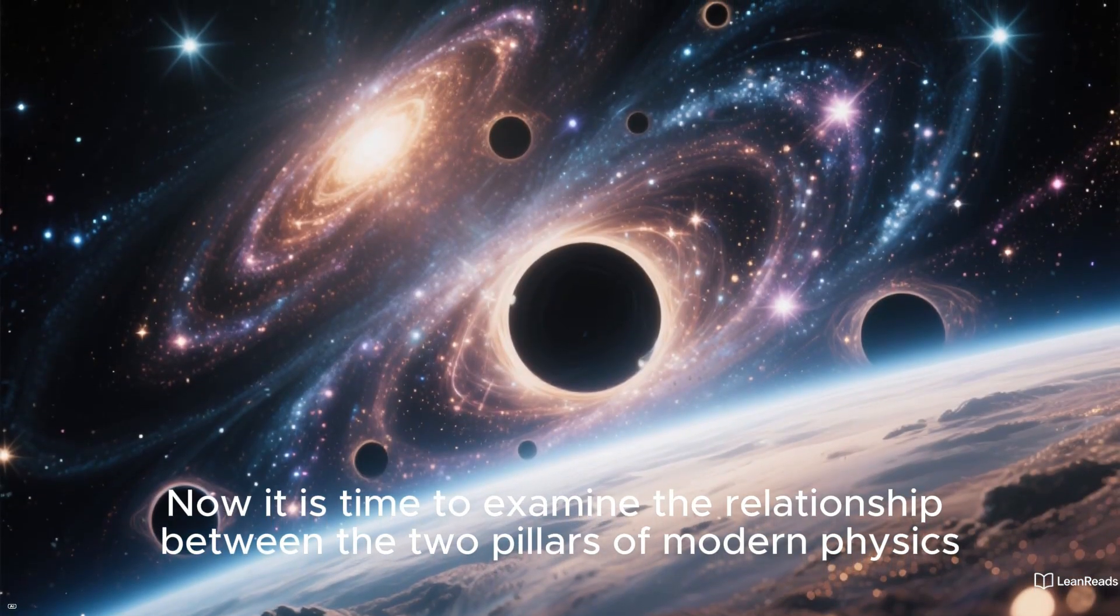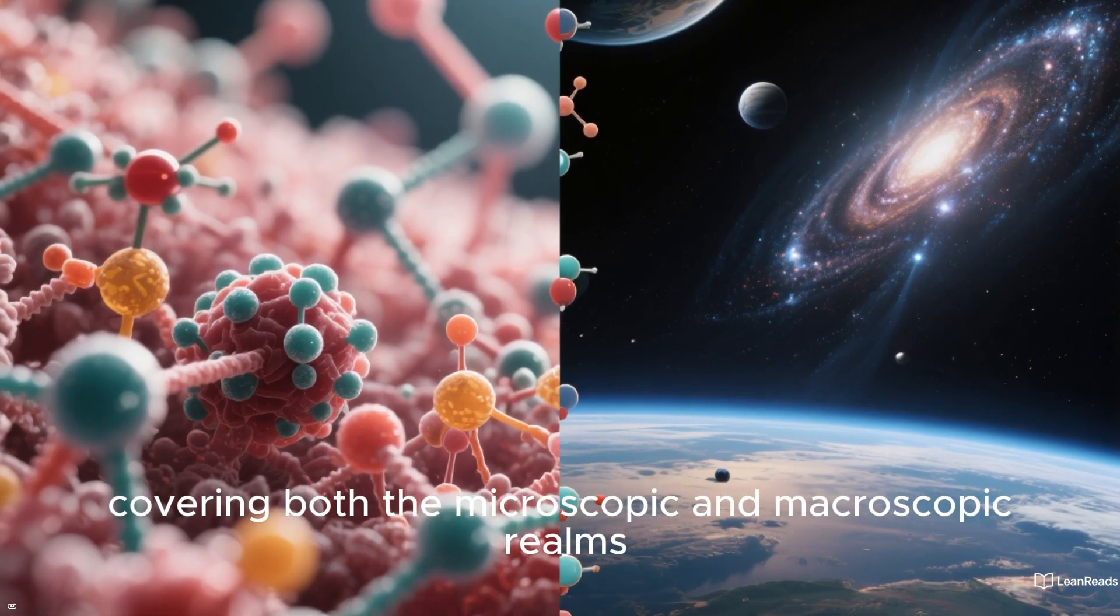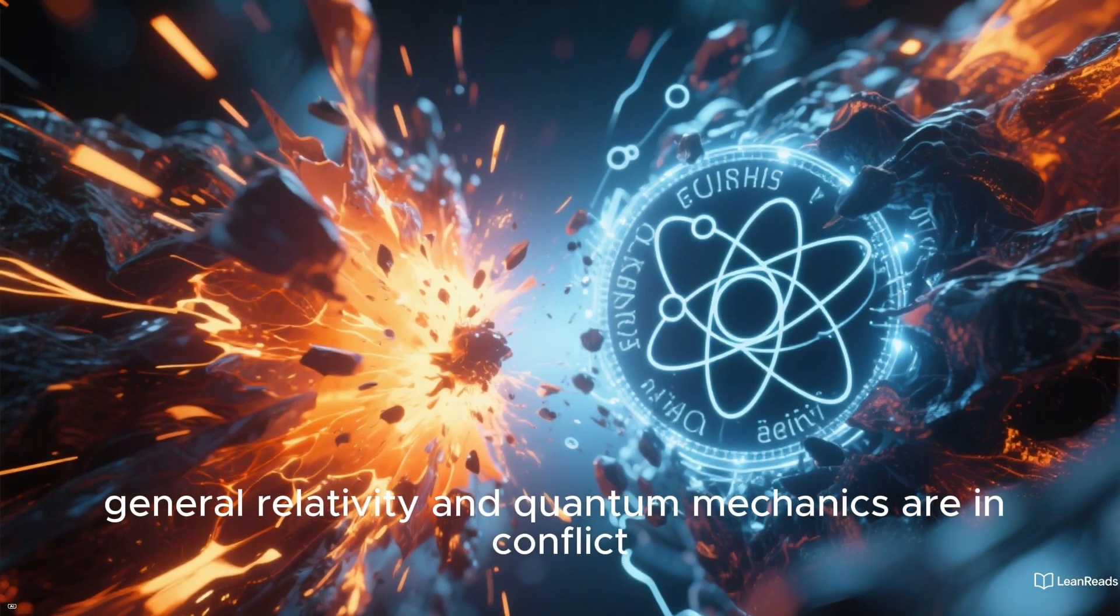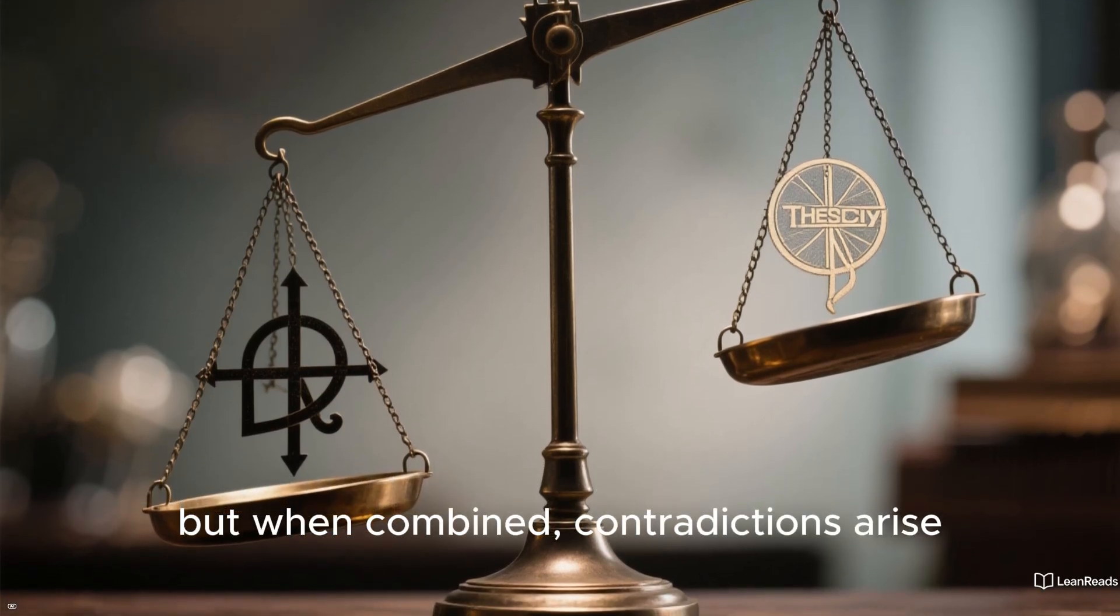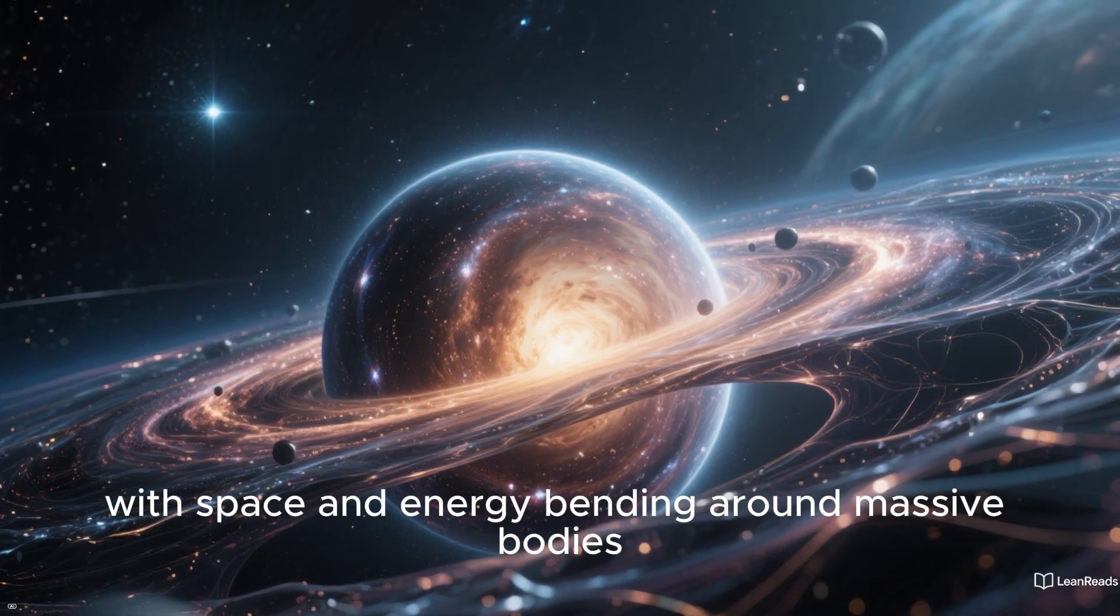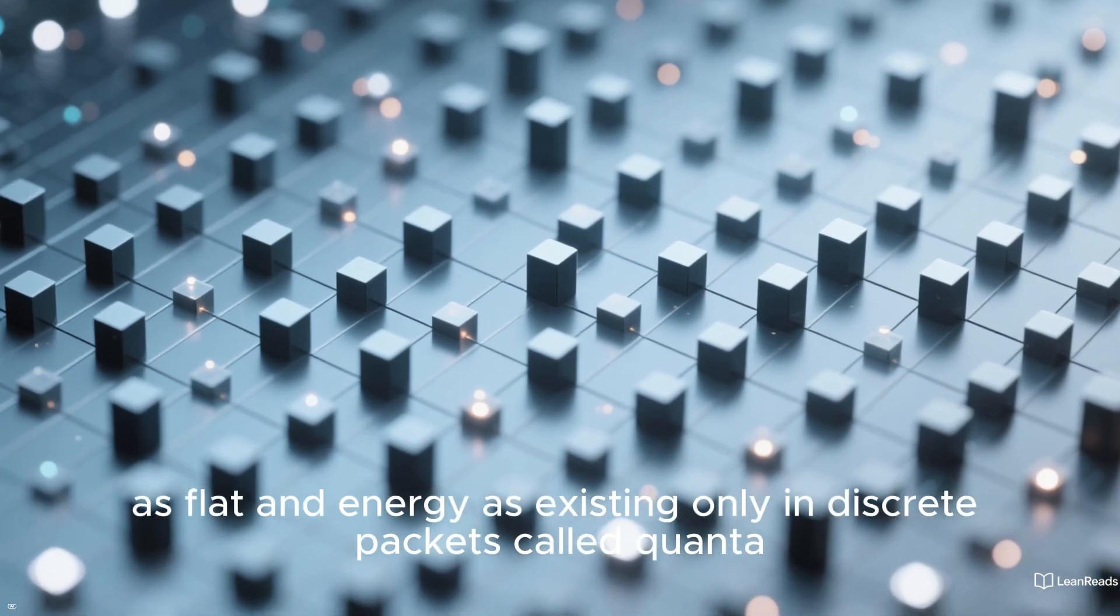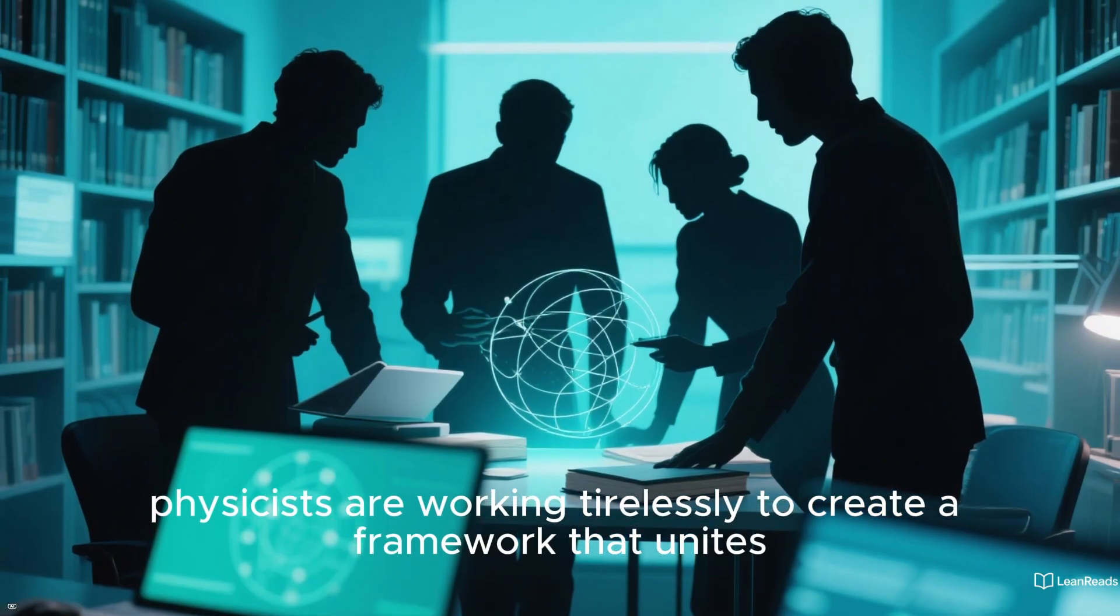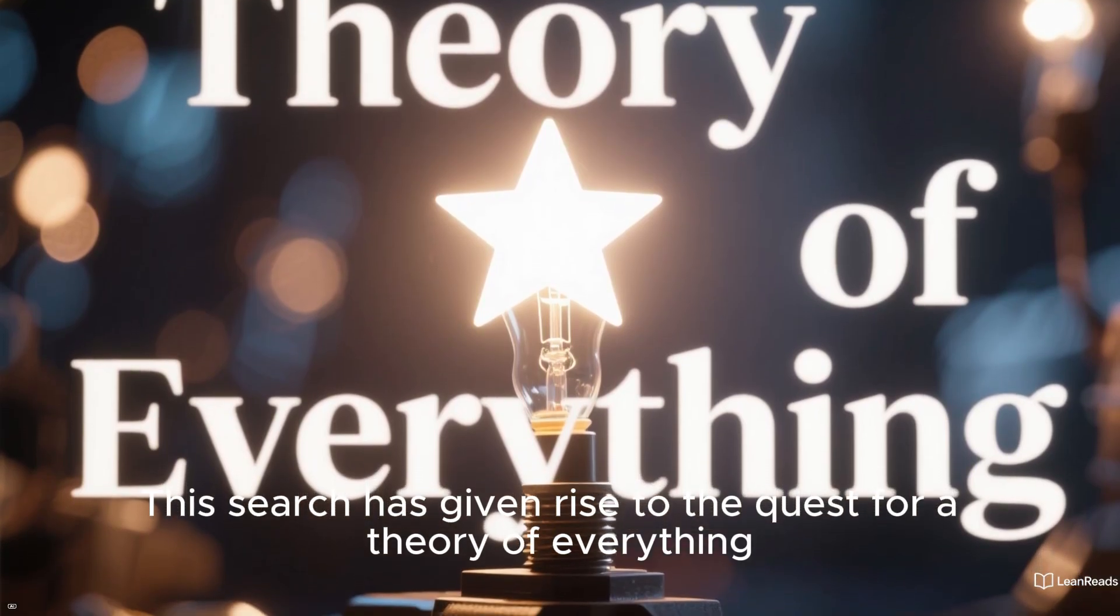Now it is time to examine the relationship between the two pillars of modern physics. In an ideal world, they would merge seamlessly, covering both the microscopic and macroscopic realms. Unfortunately, this is not the case. At present, general relativity and quantum mechanics are in conflict. Both are extraordinarily accurate within their own domains, but when combined, contradictions arise. For example, relativity describes the universe as curved and continuous, with space and energy bending around massive bodies. By contrast, quantum mechanics views space as flat and energy as existing only in discrete packets called quanta. Faced with this dilemma, physicists are working tirelessly to create a framework that unites quantum particles with the gravitational forces of relativity. This search has given rise to the quest for a theory of everything.